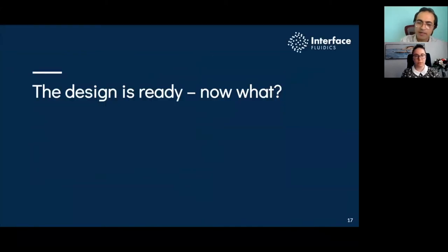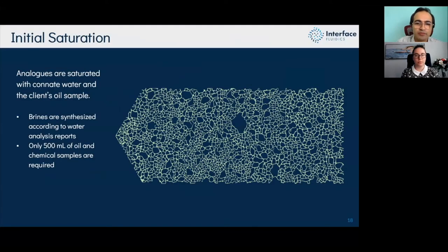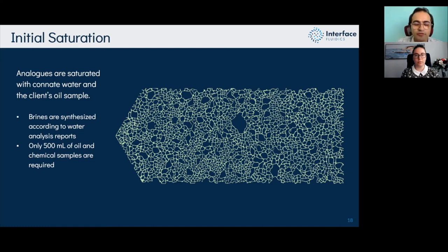Once the analog is ready, the next step is implementing our testing protocol. The first step is initial saturation — we use formation brine and oil to saturate the system and establish initial water and oil saturation. We don't use much fluid; 500 milliliters of oil is more than enough for 50 to hundreds of tests, because the pore volume of these analogs is extremely small and not comparable with conventional physical models.